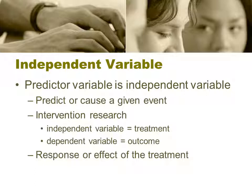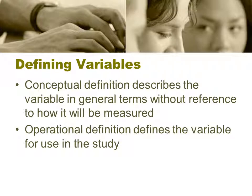Predictor variables are your independent variables, and they predict or cause a given event. In intervention research, the independent variable is the treatment and the dependent variable is the outcome — the response or effect of the treatment. When defining variables, a conceptual definition describes the variable in general terms without reference to how it will be measured, while the operational definition answers the question of how you're going to measure that variable.